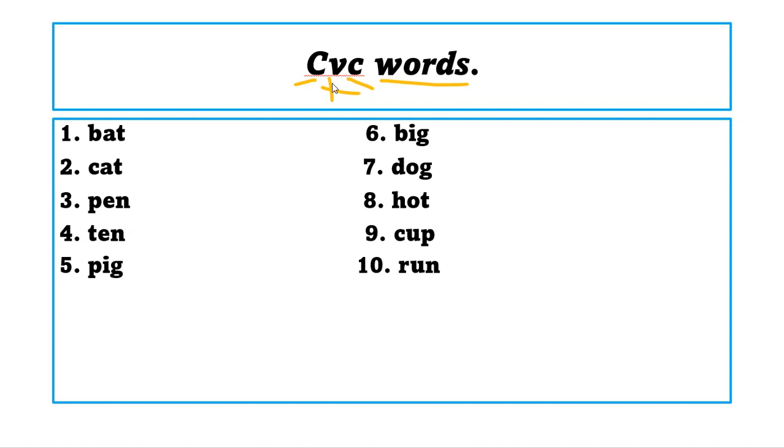And we learn the consonant and vowel sound. So here we have the CVC words, C as a consonant like B, C, D, F, H, G, J. So that is consonant. And vowels will be A, E, I, O, U. So consonant, vowel and consonant.